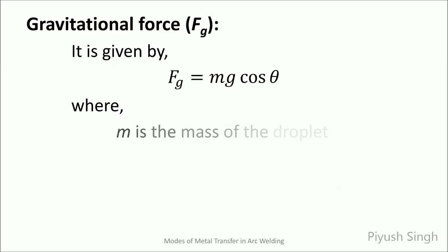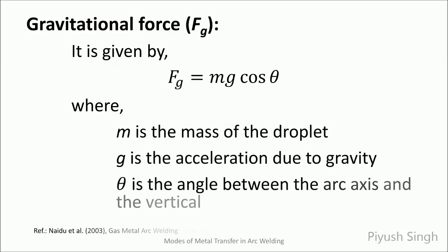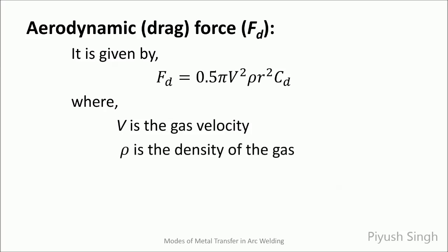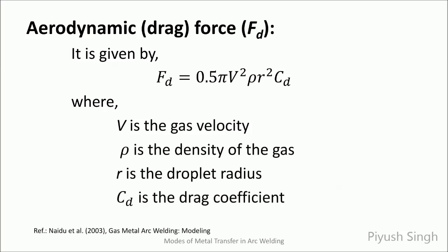The gravitational force is given by the equation shown here. Here, theta is the angle which the axis of the welding arc makes with the vertical. The gas flow or the atmosphere around and within the arc induces aerodynamic drag on the droplets, given by this equation. This force is higher with higher droplet radius and gas velocity.